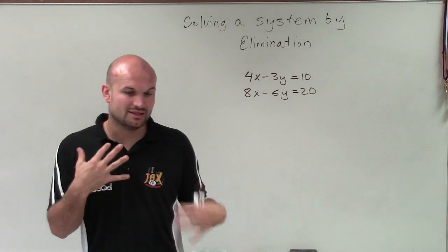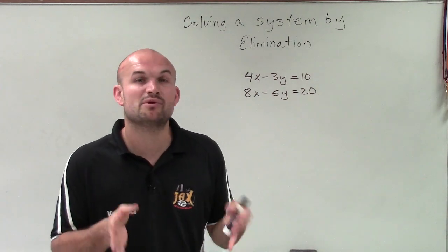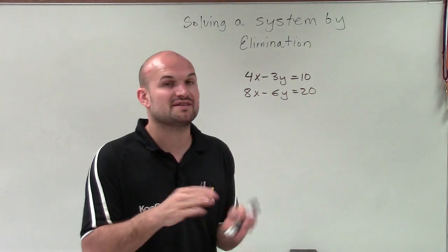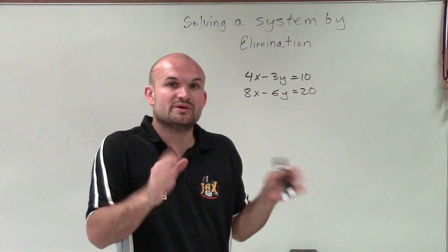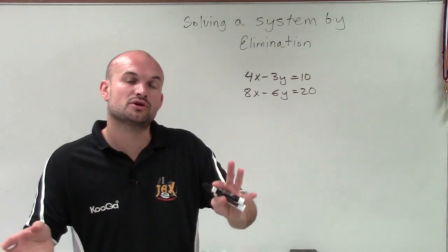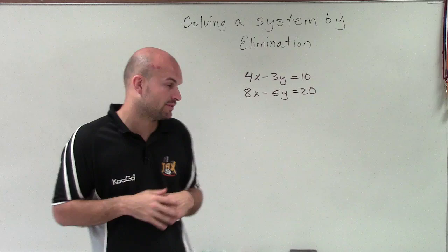When we look at elimination, we first start looking at, well, we want to eliminate the variable that have the same absolute value of a coefficient. If they're both positive, we subtract the equations. If both coefficients are one positive, one negative, then we'll add the two equations.